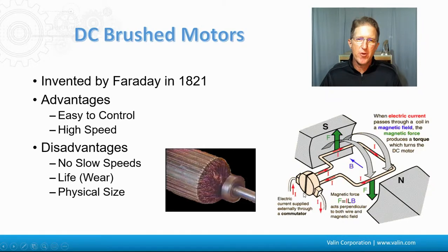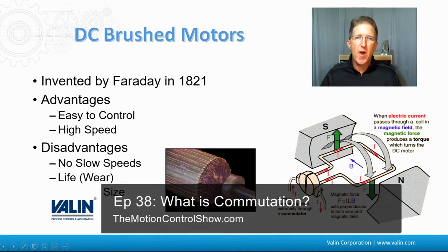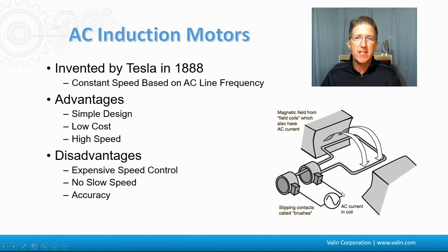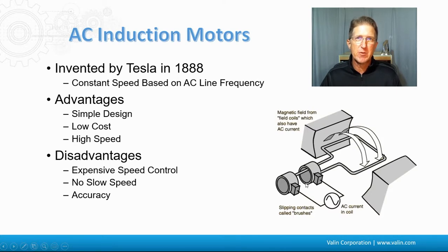Where the DC brush motor is commutated by a break in the wires and these brushes, the AC motor is actually commutated by the sinusoidal frequency of the AC current coming in and goes to the contactors. This is showing the coil being on the inside, but usually the coil is the stator on the outside with the rotor on the inside — that is the one that's turning. This is good for comparison: the difference between AC and DC and how they're commutated.